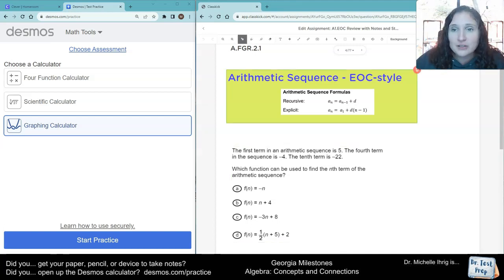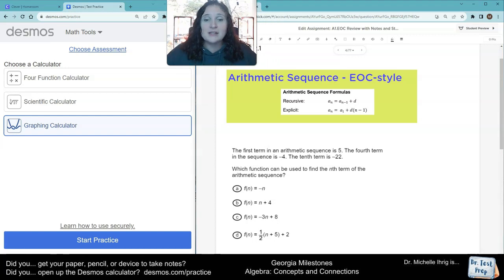So first it says that, let me move my little head out of the way. It says the first term in arithmetic sequence is five. The fourth term in the sequence is negative four. So this is the first term here. And actually, I'm just going to show you one way to do it. Let's keep it simple.